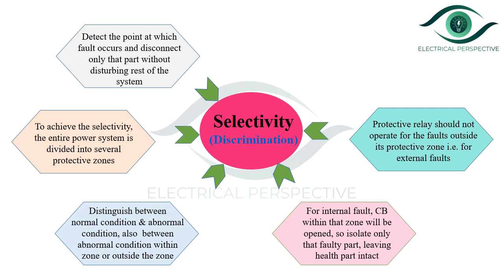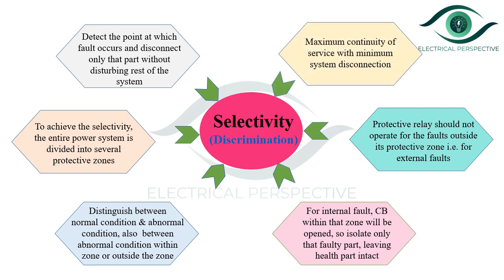If a relay is not selective and operates for a fault beyond its protective zone, an unnecessarily larger portion of the system will get disconnected. So, selectivity is essentially the maximum continuity of service with minimum system disconnection.